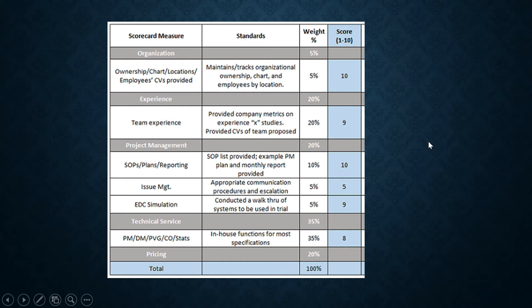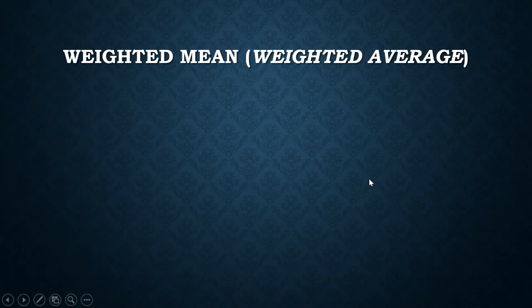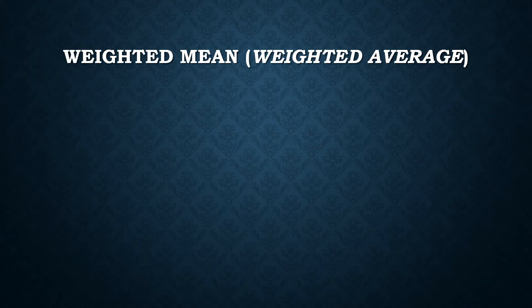This one is a scorecard for evaluating the performance of an agency. A company hired an agency to do some jobs for them. And these are the criteria for evaluating their performance. These are the weights of each of those criterion. And these are their scores in each of these criterion. What is the weighted mean? All of that have to do with weighted mean.